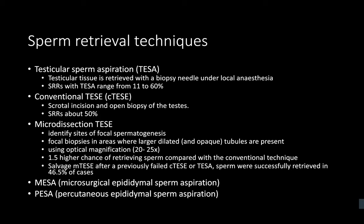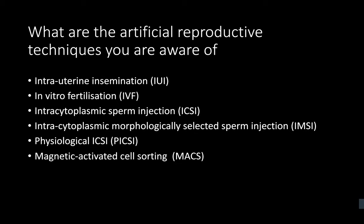Assisted reproductive techniques include: IVF — in vitro fertilization, involving fertilization between sperm and oocyte in a petri dish then implantation, more useful for fully motile sperm; ICSI — intracytoplasmic sperm injection, injecting a single sperm directly through the zona pellucida into an oocyte, more useful for sperm with reduced motility; and IUI — intrauterine insemination, where sperm are injected directly into the uterus for fertilization in utero. These are the standard techniques supported by NICE guidelines.